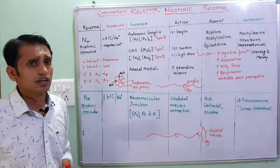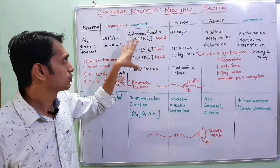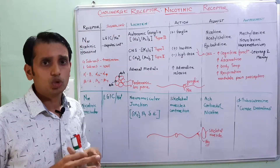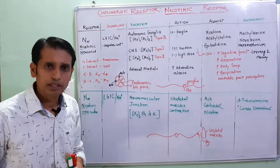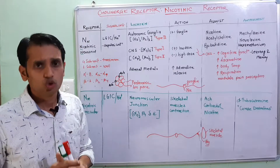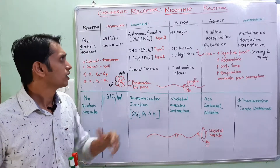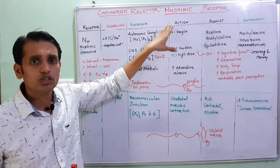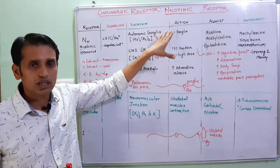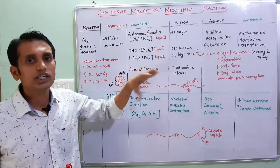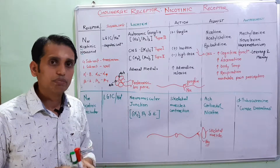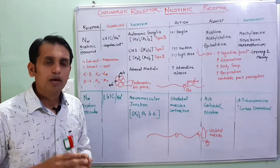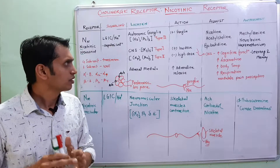Now let's talk about their actions. The NN receptors are mainly found in the autonomic ganglia, whether sympathetic or parasympathetic — this covers the stimulation of both ganglia. When this receptor is activated and it is in the sympathetic division, the sympathetic action will be added, and if it is in the parasympathetic division, then the parasympathetic action will be added.